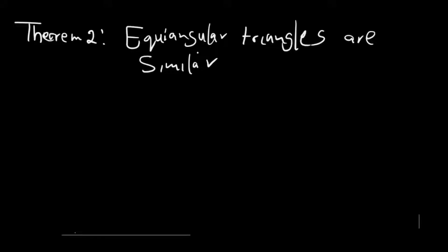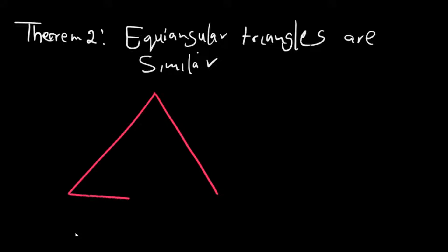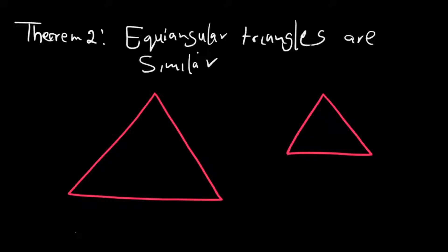Say we're having a big triangle like this one here and a small triangle like this one here. We are given points: this is A, this is B, this is C, and this is P, this is Q, and R.